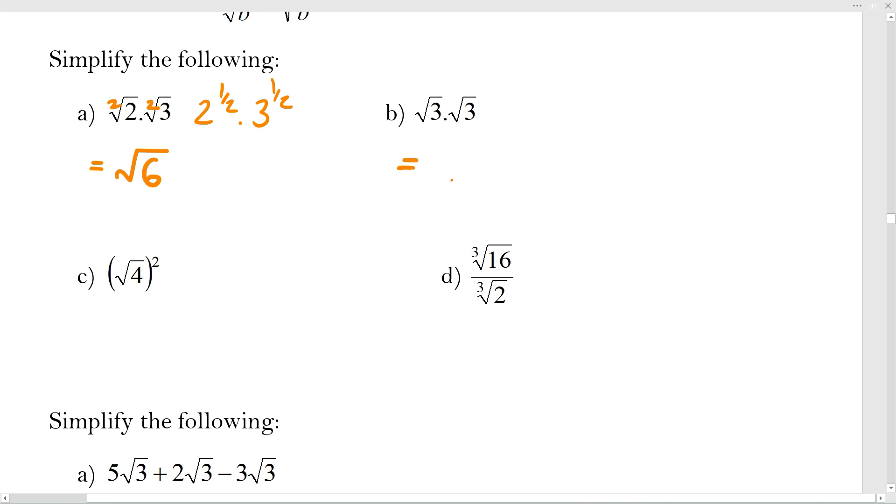You might be able to do this one in your head. It would actually be root 9, which is just 3. You're basically squaring—just to remind you that if you square a square root you're undoing the square root and then the number inside is just your answer, which is what's happening with question C here. That's just going to be 4.